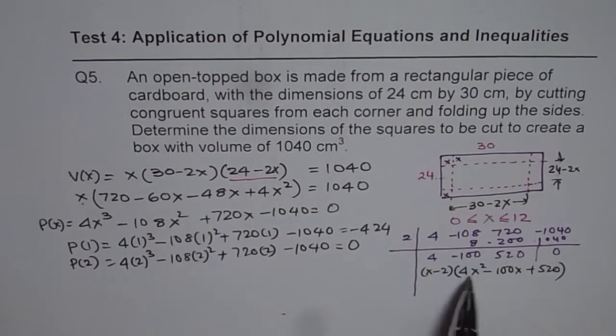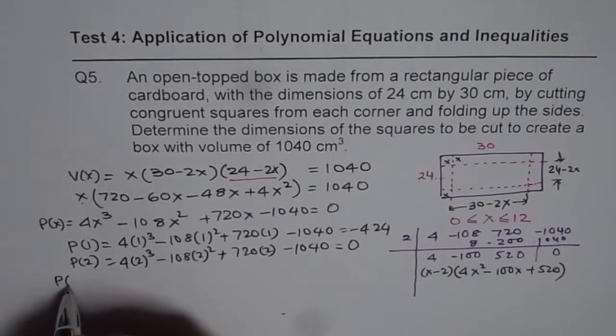So, we can write x minus 2 times. The quadratic equation is 4x squared minus 100x plus 520. So, that is the polynomial equation, right? Now, we need to find 0. So, one 0 we already have, which is x equals to 2. And for this equation, well, 4 is a common term.